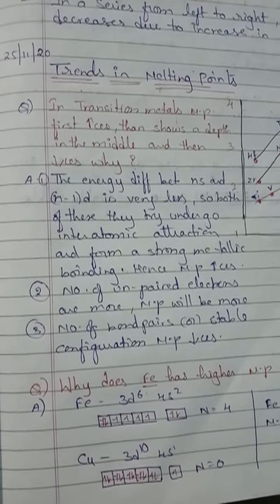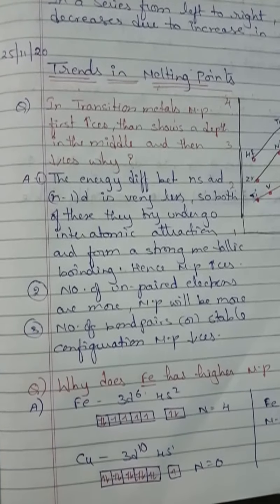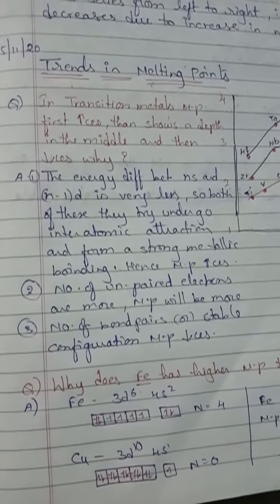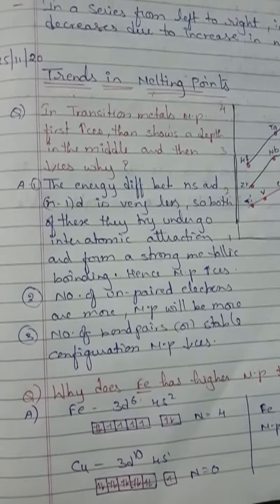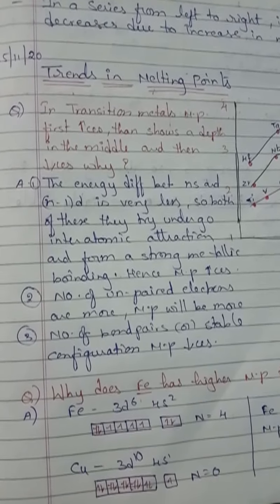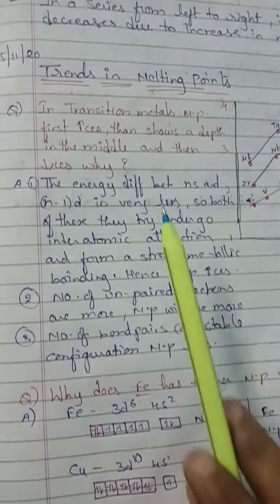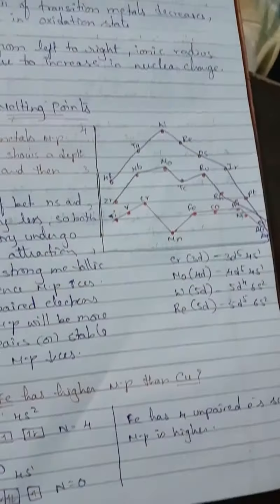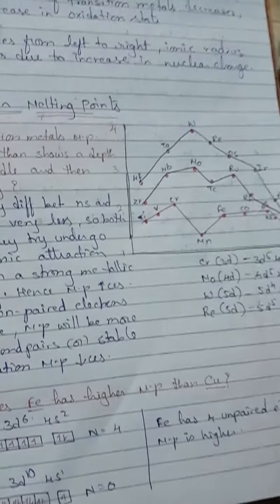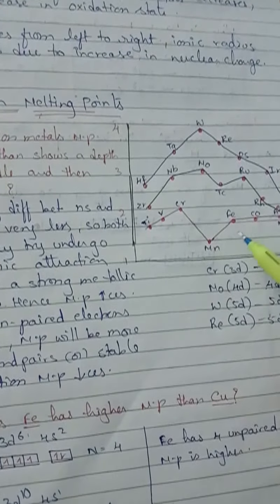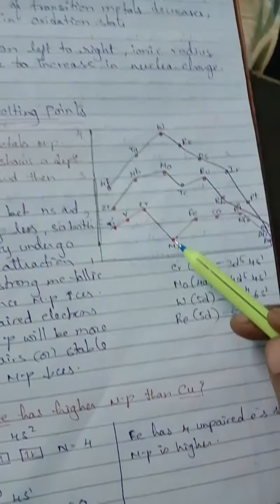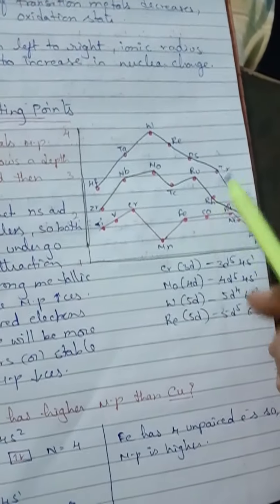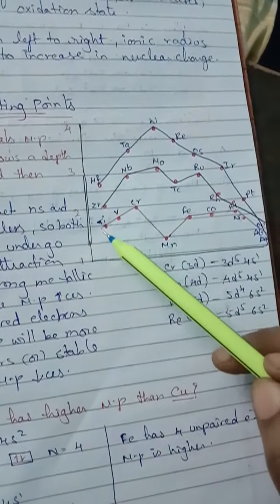Hello students. In today's session, we are going to cover some more trends in D and F block elements — that is, trends in melting points. Look here: this is the trend in melting points of transition elements.